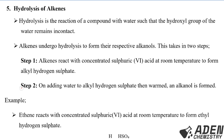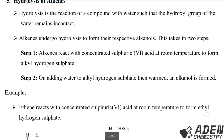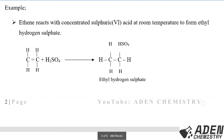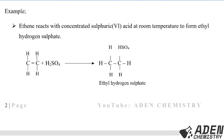In the second step, water is added to alkyl hydrogen sulfate, which is then warmed, and an alkanol is formed. As an example, when ethene reacts with concentrated sulfuric acid at room temperature, it forms ethyl hydrogen sulfate. We write ethene's structural formula, then the formula for sulfuric acid.